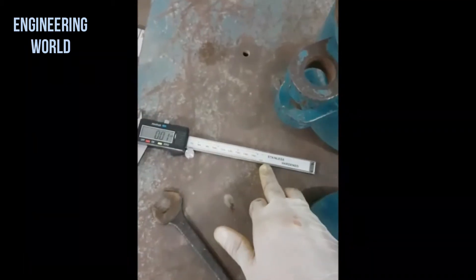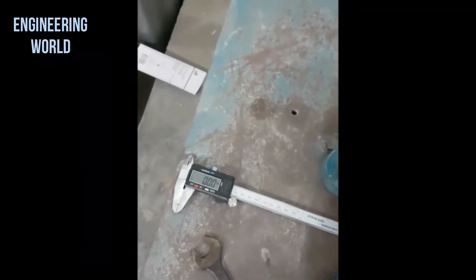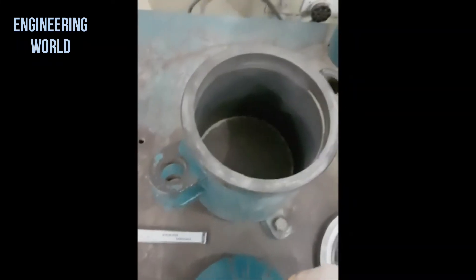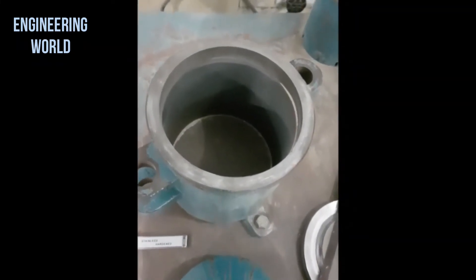This vernier caliper can be used to measure the dimensions of the molds so that we can calculate its volume, and it can also be used to determine the settlement that takes place once the sand has been compacted.